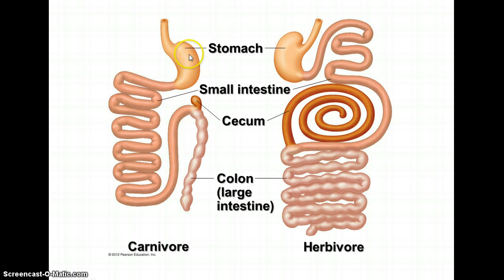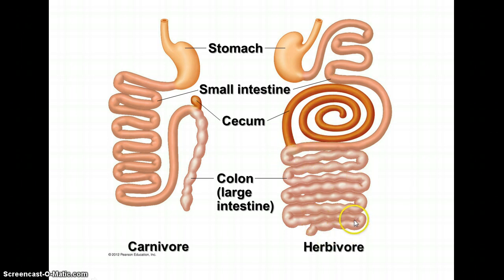Here we have a comparison of a carnivore's digestive tract and that of a herbivore. The carnivore has a stomach, a fairly long small intestine, a relatively short colon, and a very small cecum. Herbivores, on the other hand, have much longer systems — a stomach, small intestine, a quite long cecum for processing, and an even longer large intestine, because more absorption and digestive processes are needed to break down plant material and absorb moisture in the colon.